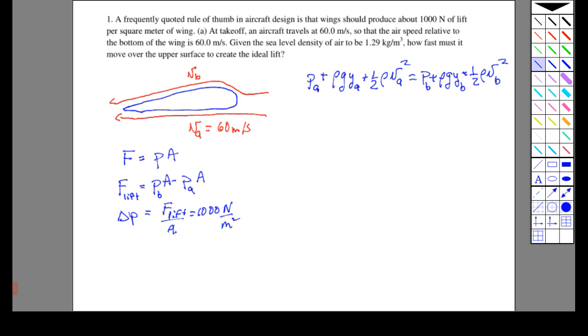The difference in height we're just going to take to be negligible, so this is going to be zero. What we want is delta P, so delta P is P_B minus P_A.